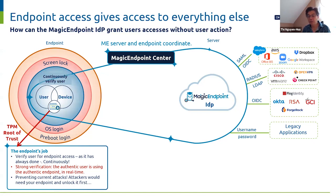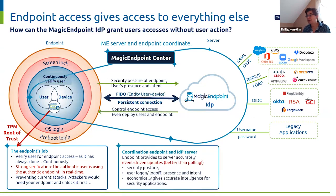This condition alone will prevent 99 if not 100% of all attacks today, because the attacker would have to steal the endpoint and unlock it first. The endpoint continues to verify the user and has a way to prove it to the server. The endpoint will then have a persistent connection to the server using FIDO public key-based authentication to make sure it is secure. The endpoint will continuously give updates when there is a change in security posture, or if the user logs off, or if the user leaves the endpoint, so user presence is also updated.